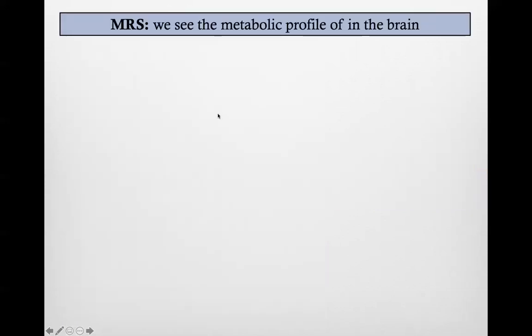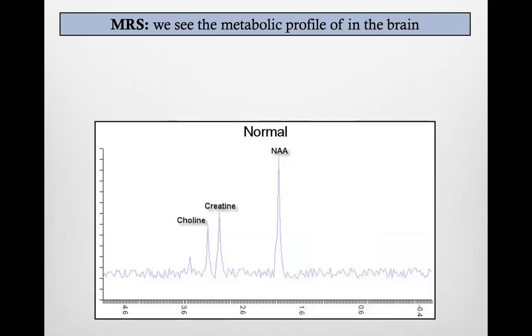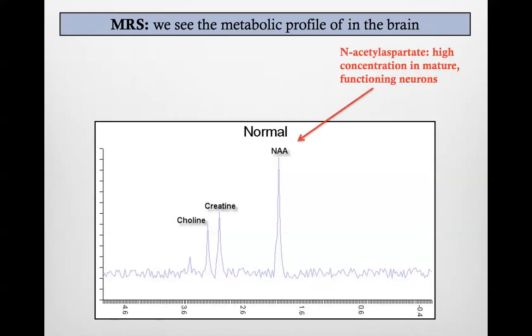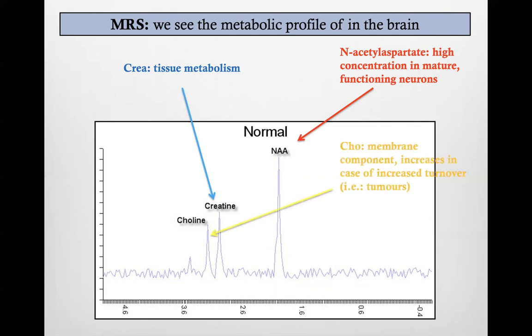Then we have MRS — magnetic resonance spectroscopy — where we see the metabolic profile of the brain. The normal metabolic profile includes N-acetylaspartate (NAA), which is in high concentration in mature functioning neurons, meaning if something is wrong it will go down. We also have creatine, which reflects tissue metabolism and is normally stable, and choline, a membrane component that increases in cases of increased turnover — for instance, with an aggressive tumor.